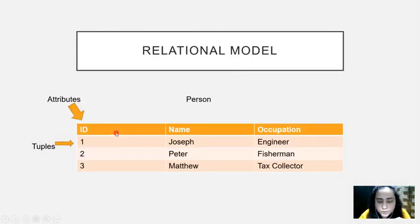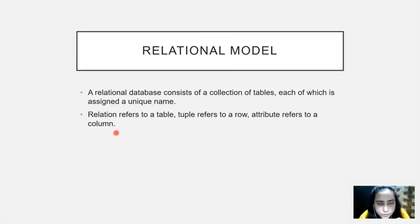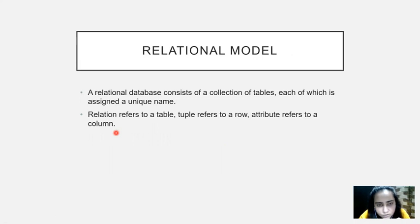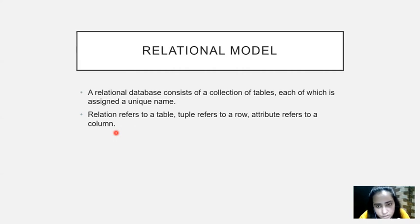Let's move on to the relational model. The relational model consists of a collection of tables and each table is assigned a unique name. Think of this as having a file system in your personal computer or laptop or mobile phone. Each and every file in the file system contains a unique name, and a database is like a folder — it cannot contain tables having the same name.